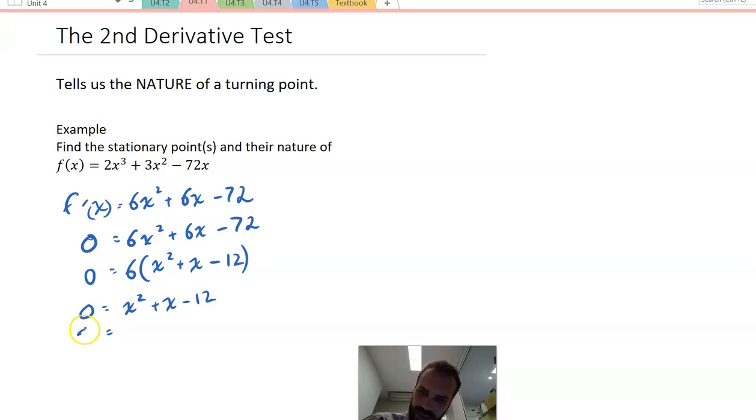And I can factorize x² plus x minus 12. And I'll get x, x. And it's probably going to be positive 4 and negative 3. And finally, therefore, x equals negative 4 or x equals positive 3.